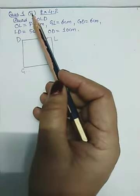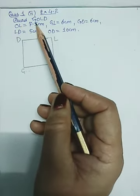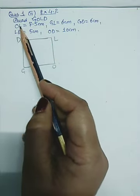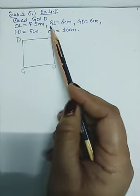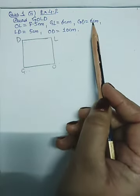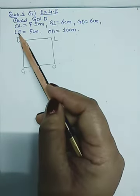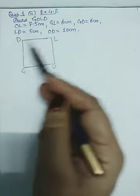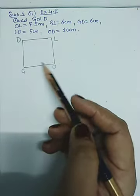Now, let us start another question. This is question number 1, part 2. Here, we have to draw a quadrilateral GOLD. G-O-L-D. So you can see OL is given 7.5. GL is given 6 cm. GD is also 6 cm. LD is 5 cm. And OD is 10 cm.